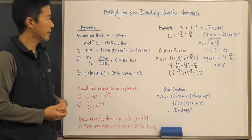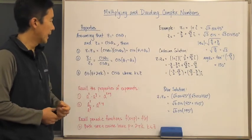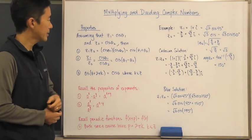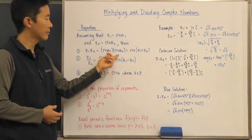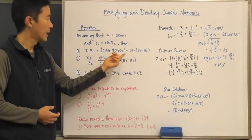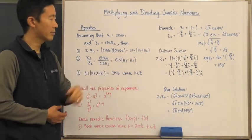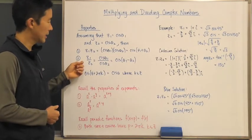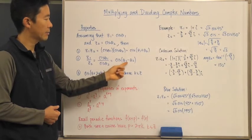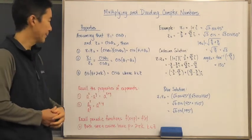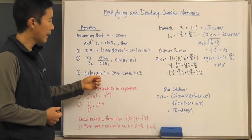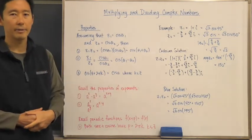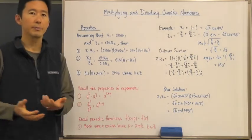Assuming that z₁ is equal to cis θ₁ and z₂ is equal to cis θ₂, then the product z₁ times z₂ is going to be cis of θ₁ plus θ₂. The quotient is going to be cis of θ₁ minus θ₂. And cis of θ plus 2πk is equal to cis θ, where k is an element of ℤ.